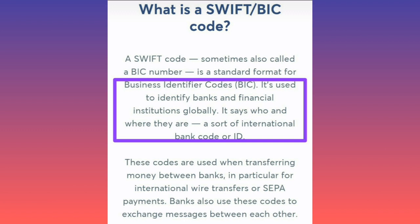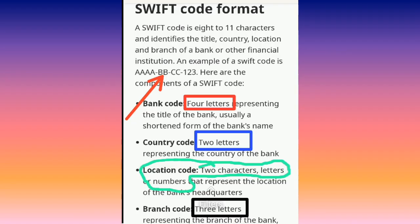I want to show you the format of the BIC code or the SWIFT code so that whenever you need to use it, you'll be familiar with it. A SWIFT code is 8 to 11 characters and identifies the title of the bank you are sending money to, the country it is in, the location, and the branch of the bank or other financial institution. An example of a SWIFT code is AAABBCC123.